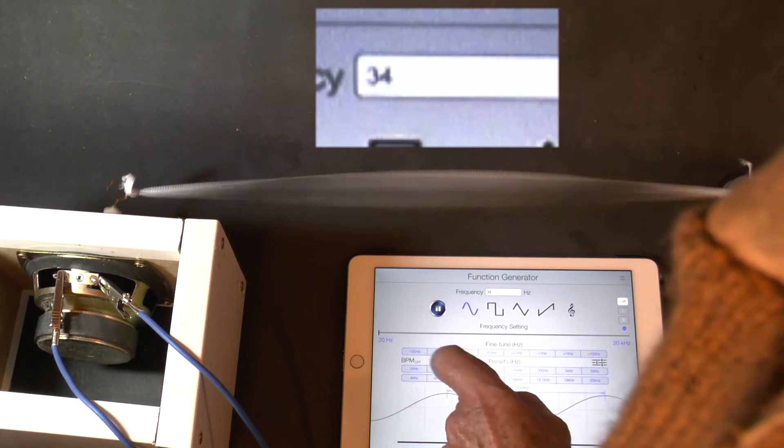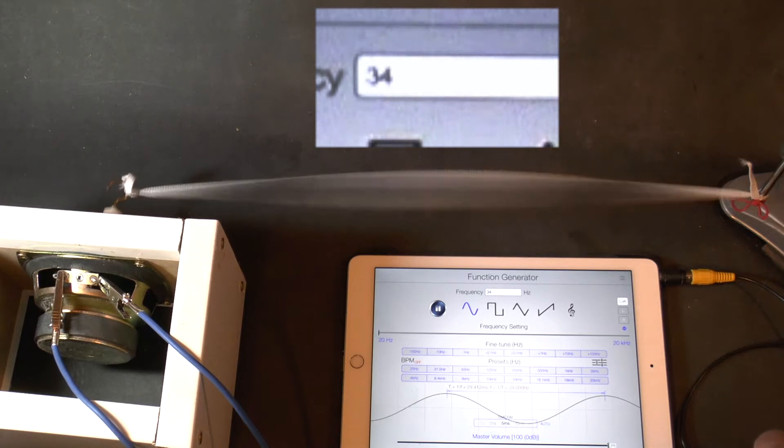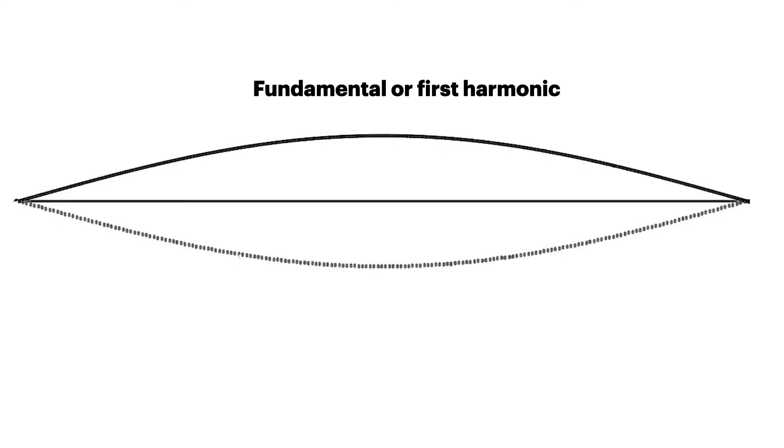That is, the frequency of the generator matches the natural frequency of the string. This point of resonance is at the fundamental of the string, where it goes up and down a bit like a skipping rope.